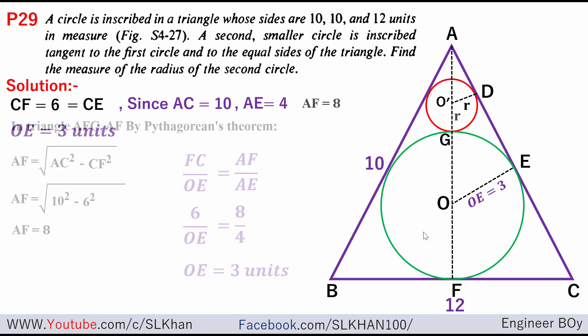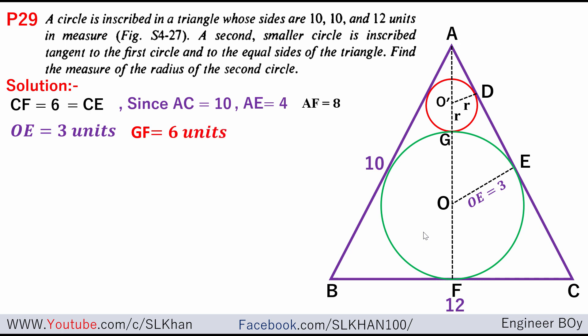Alright, then as you can see GF is going to be 6 units, because that's just the diameter of the green circle or the big one. And then by subtracting GF from the total height of the triangle, which is AF, we can get AG, which is going to be 2 units.